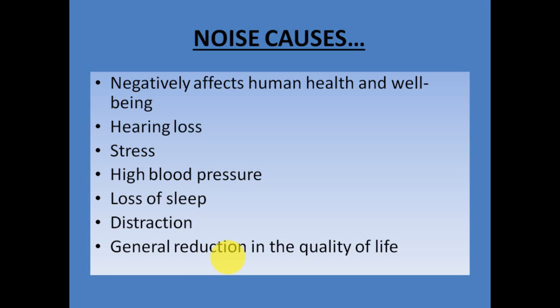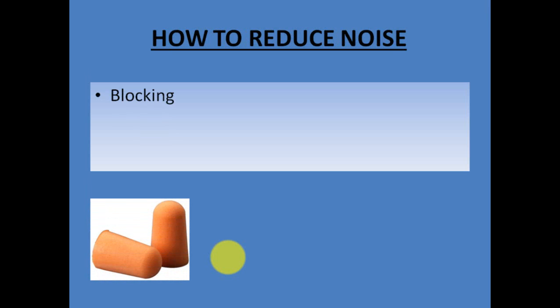Most of us experience dangerously loud noise levels, because of which we generally have hearing loss as we grow old. Now we will discuss how to reduce noise. The first method, flashed on the screen, is called blocking the noise. You can see the picture right below — these are called earplugs. If we put the earplugs in our ears, the noise will be blocked and no more noise will be entering the ears. So that is one method.